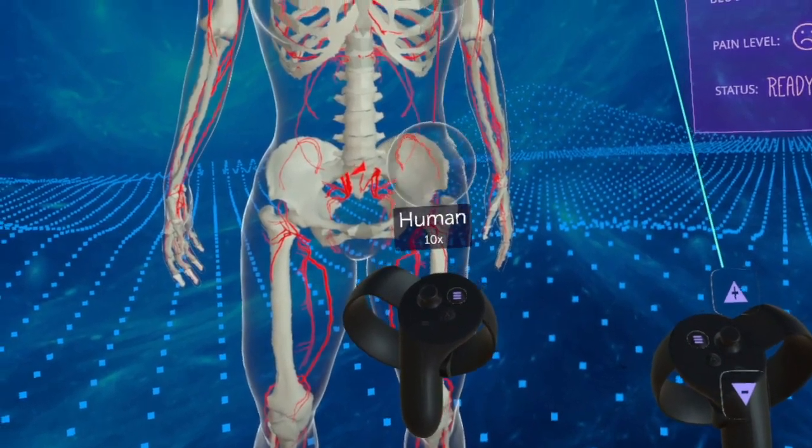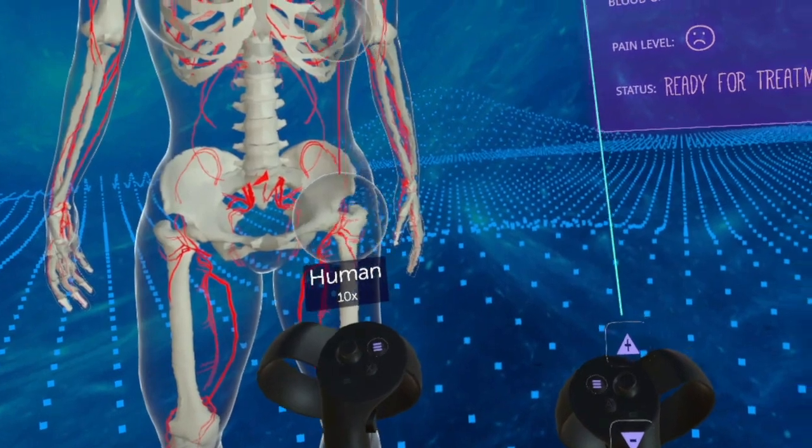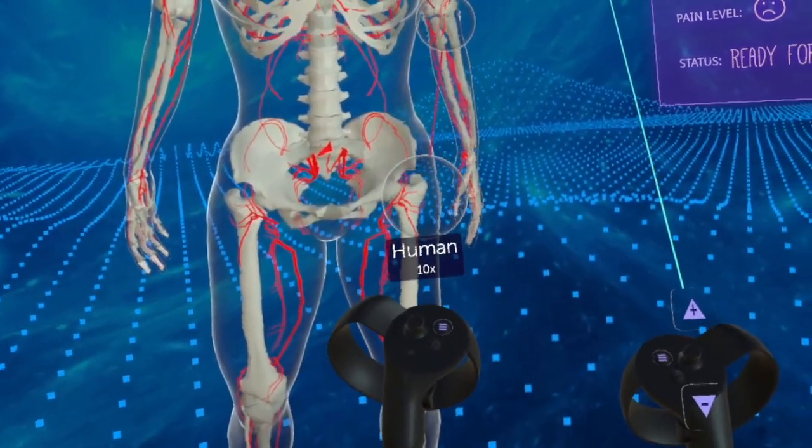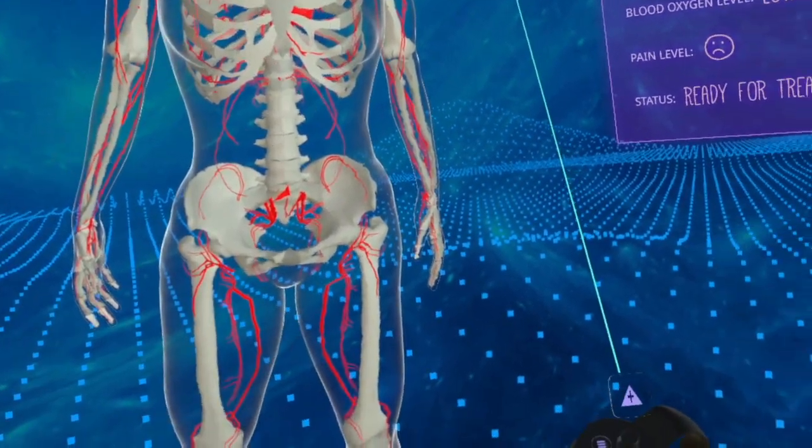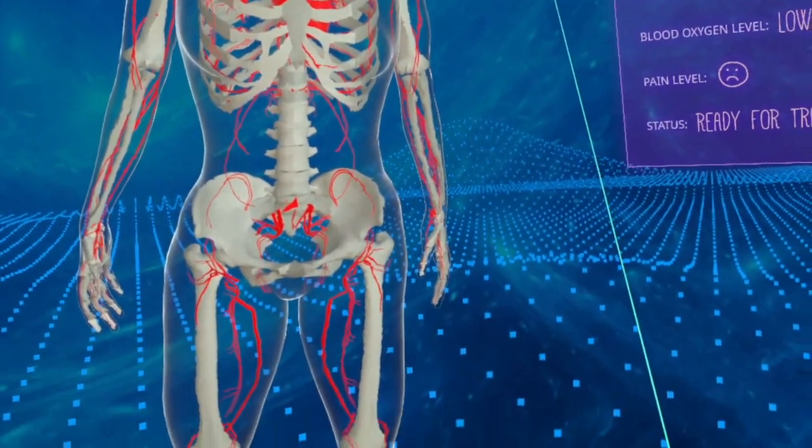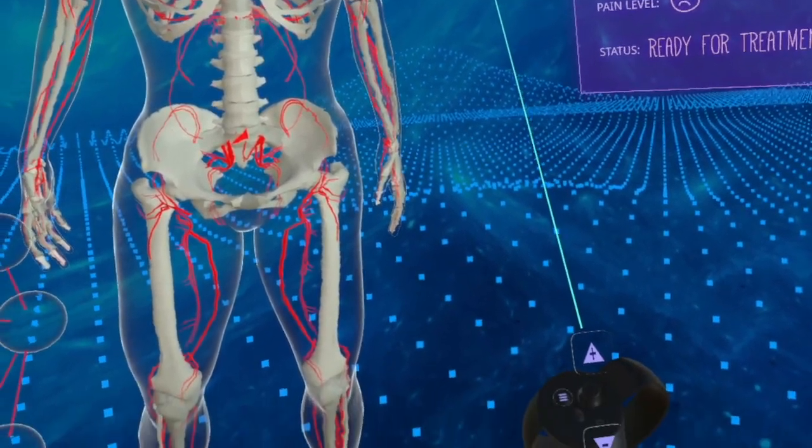What we're going to do first is get rid of this left hand controller by initiating demo mode. To do this, we want to use the B button on the right controller, or whichever button has these three lines on it in your visualized controller.